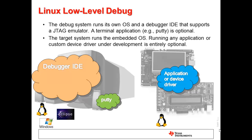Let's take a look at a simplified graphical representation of the Linux kernel debug environment. On the host side, an IDE that supports JTAG debug is running. A communication transport may or may not be needed. On the target side, the Linux kernel is running in addition to any applications.